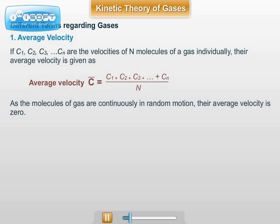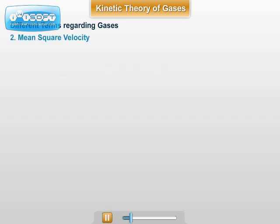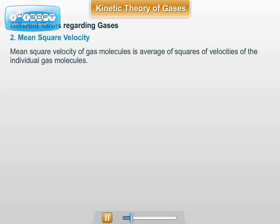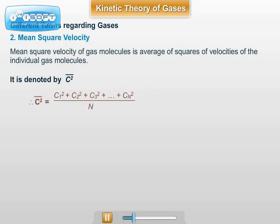Hence, mean square velocity of the gas is calculated. Mean square velocity of gas molecules is the average of squares of velocities of the individual gas molecules. It is denoted by C² bar. So, C² bar = (C1² + C2² + C3² + ... + Cn²) / n.